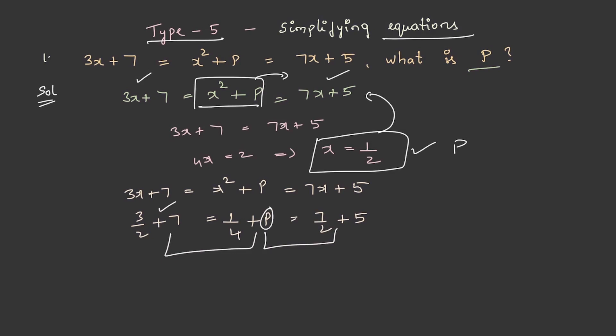In this case, let us take the first and second. So, 3/2 + 7 = 1/4 + p.